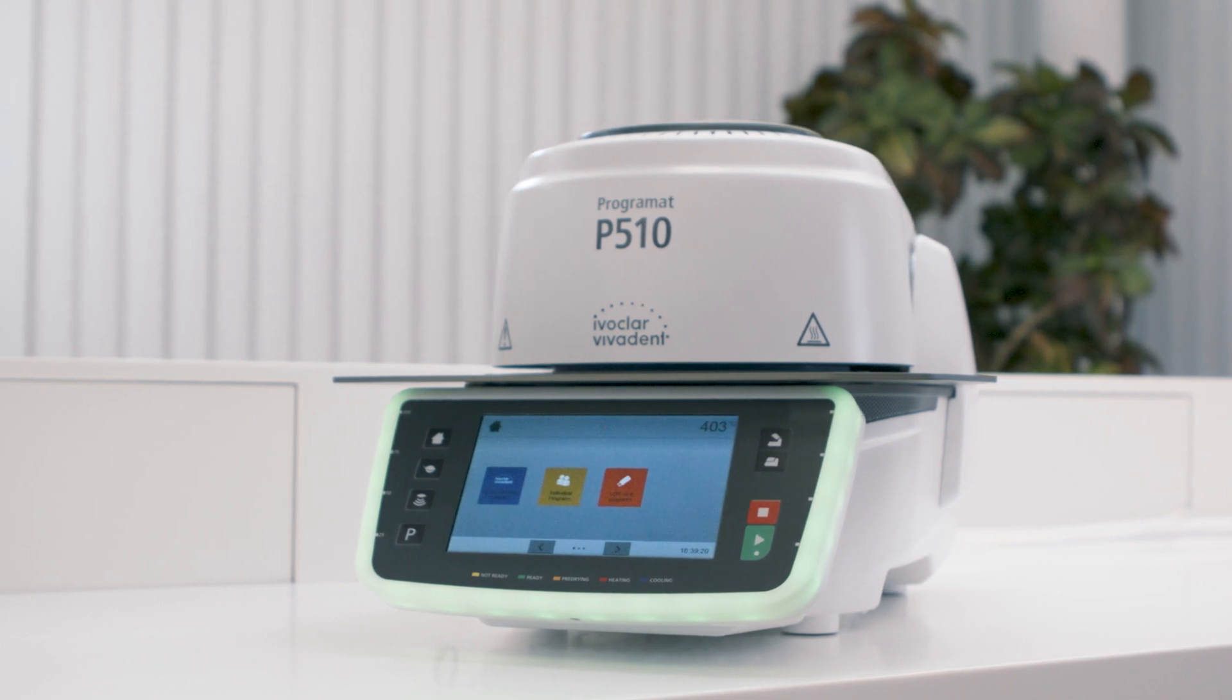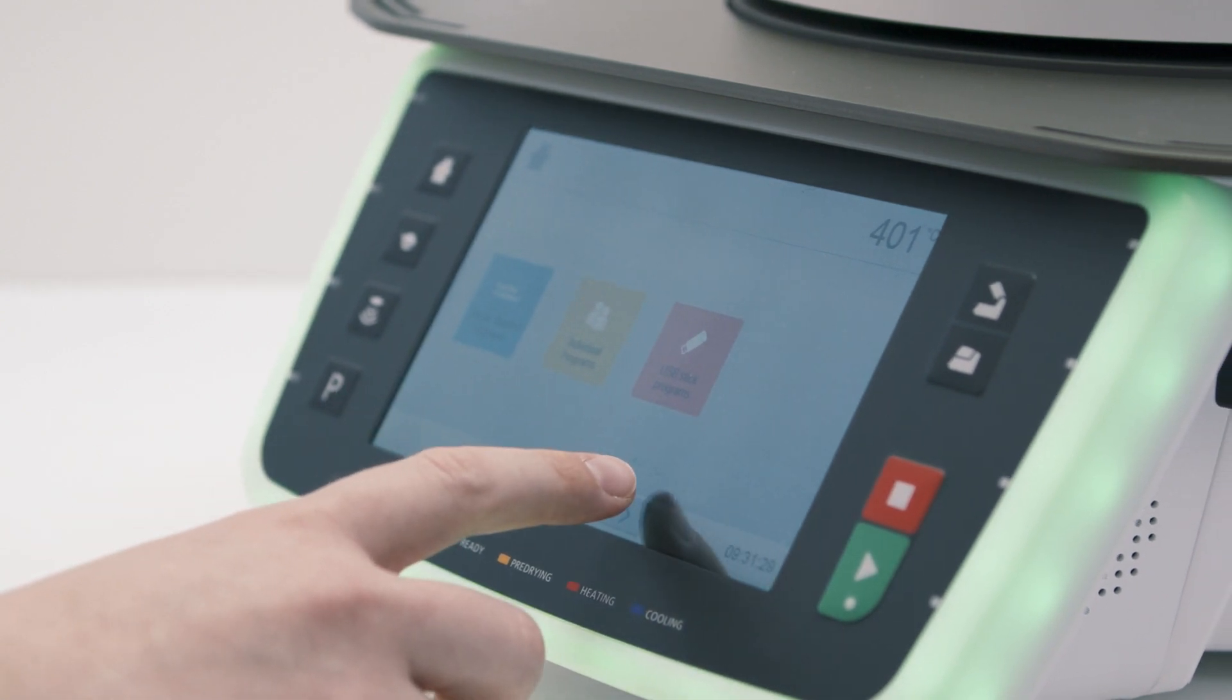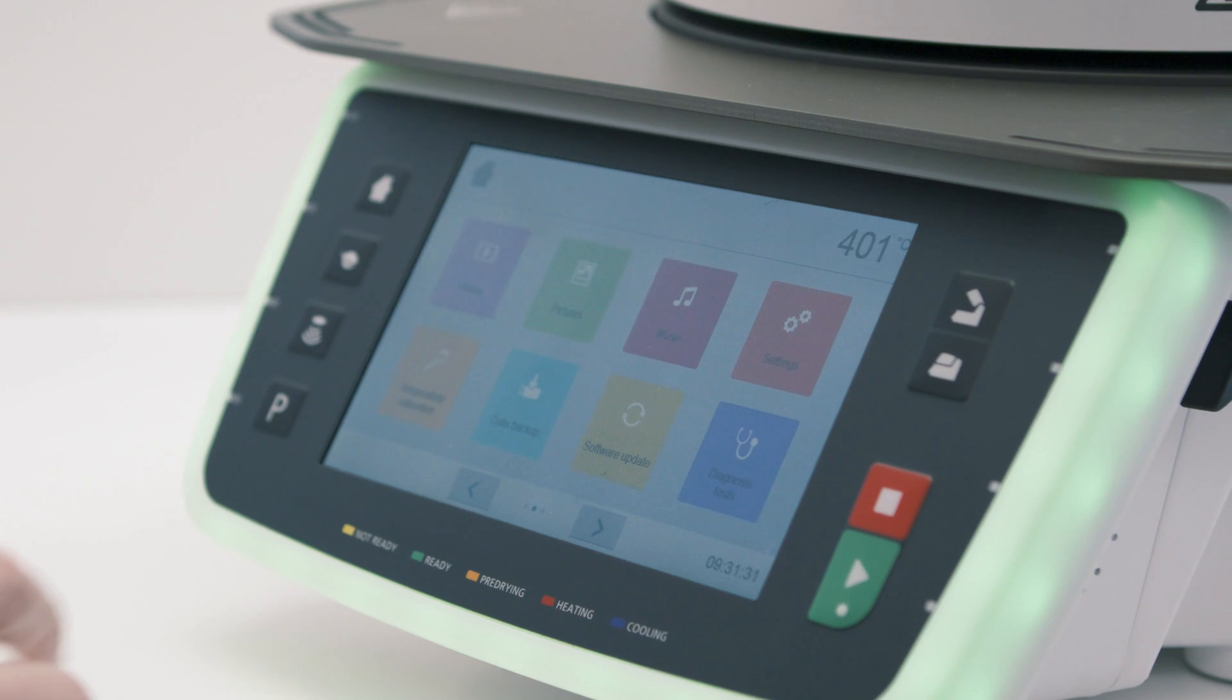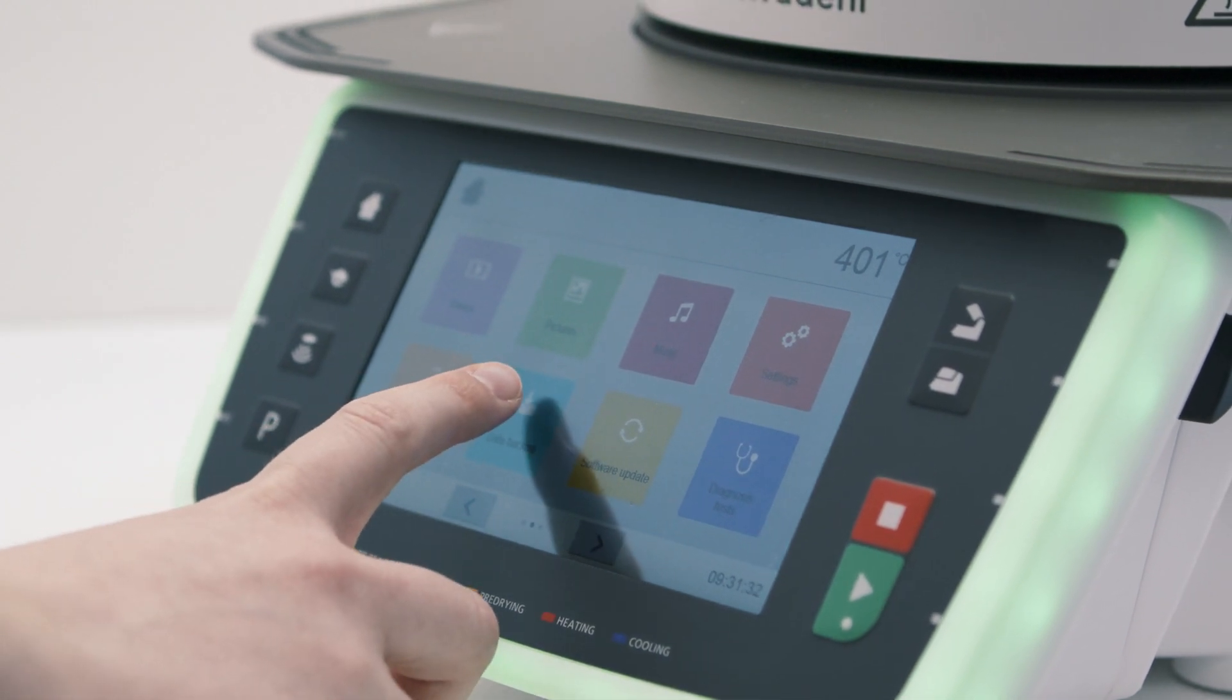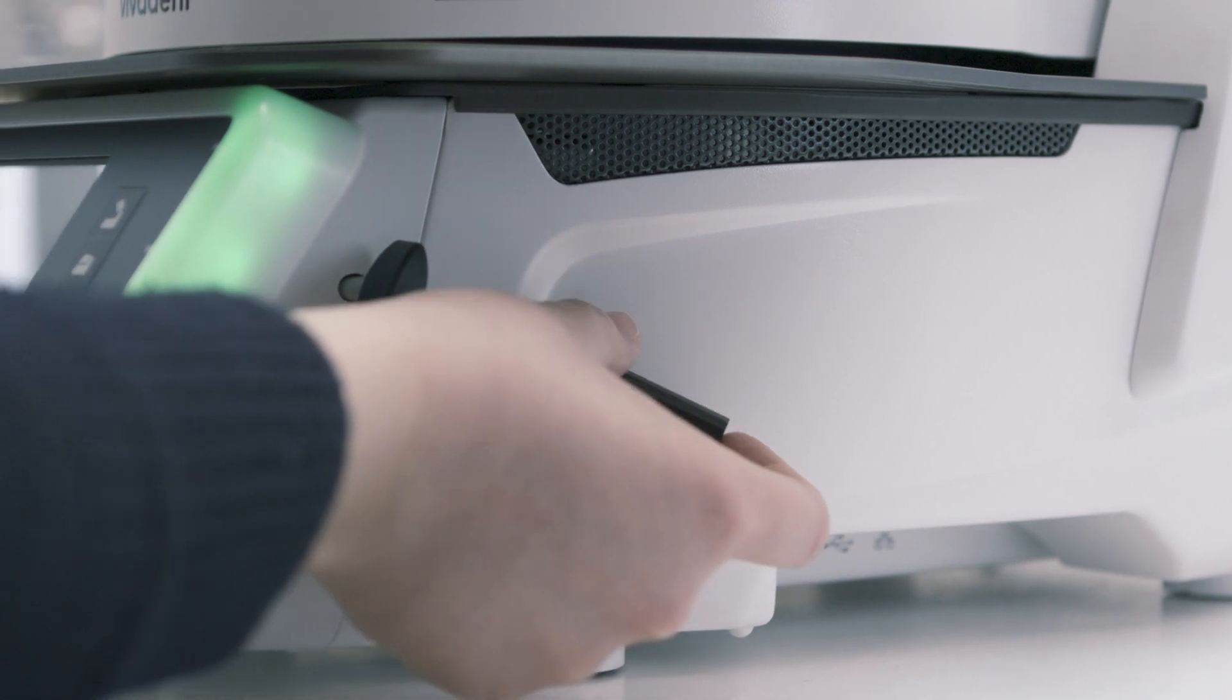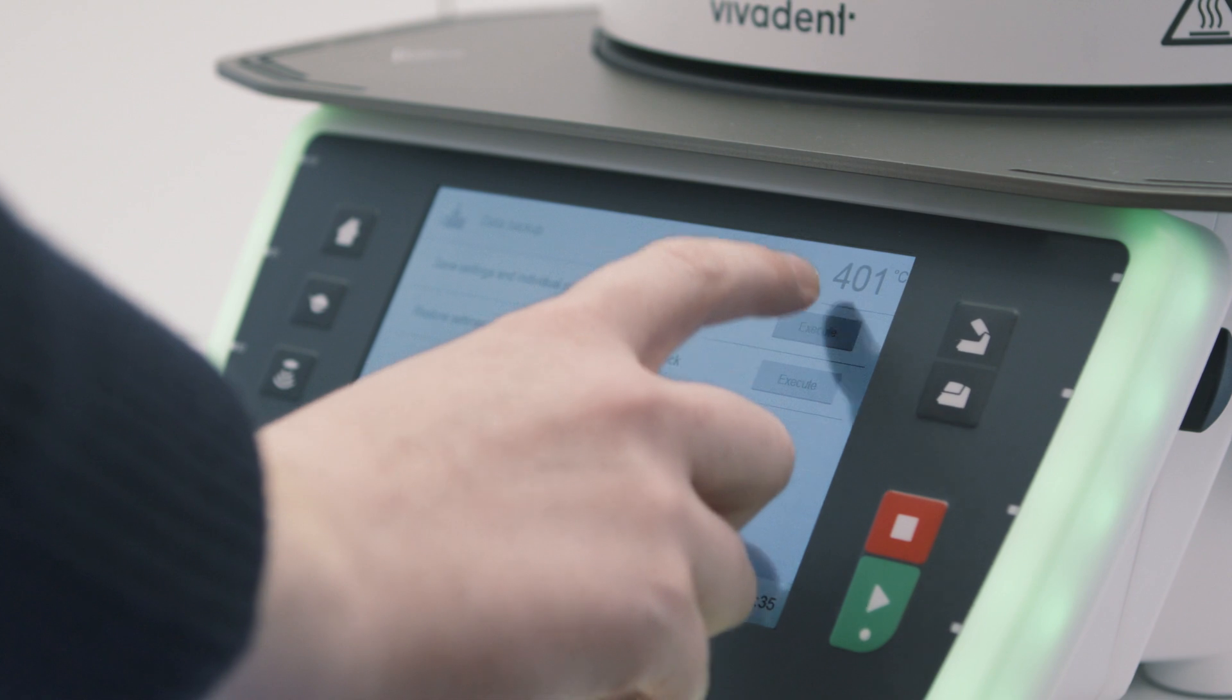You can conveniently back up your personal furnace settings and individual programs on a formatted USB flash drive. Select the data backup menu on the home screen. Connect a USB flash drive to your furnace. Press the execute button.